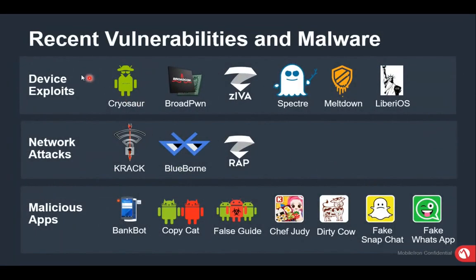Recent vulnerabilities include device exploits, network attacks, and malicious apps. People may accidentally install malicious apps and fall into the hands of hackers. For example, a couple of months ago fake WhatsApp apps were circulated. Users could install two WhatsApp apps on the same device — one from the original source and a secondary side-loaded one that looked like the real WhatsApp but was malicious and could read personal data on the device.